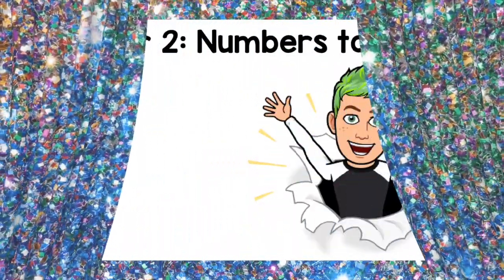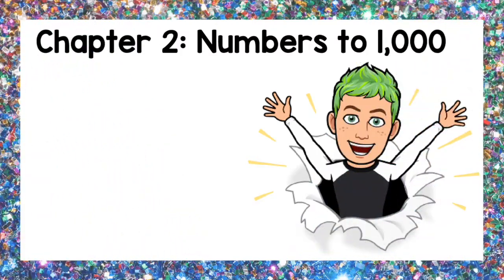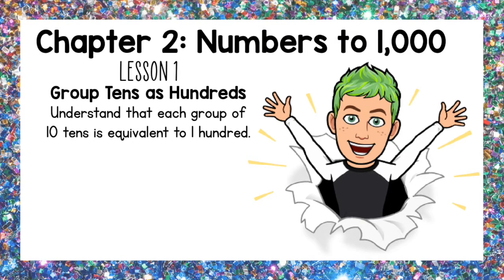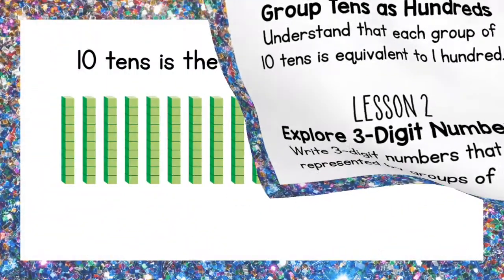Hey guys, it's Mr. Schultz back again with another math video. We are in chapter 2, which is numbers to 1,000. In today's video we will have two short lessons: first, we will understand that each group of 10 tens is equivalent to 100, and second, we will write three-digit numbers that are represented by groups of tens. Now let's get started.